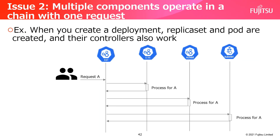Issue 2 is that multiple components work in a chain with one request. In Kubernetes, one request may cause a component to work, and that component's behavior may cause other components to work. For example, if we request to create a deployment, the deployment controller will also create a replica set, and then the replica set controller works. This means multiple components work in a chain with one request. Therefore, we need to propagate the trace ID to each of the components that work in that chain. However, the behavior of each component is independent, so the issue is how to link them.